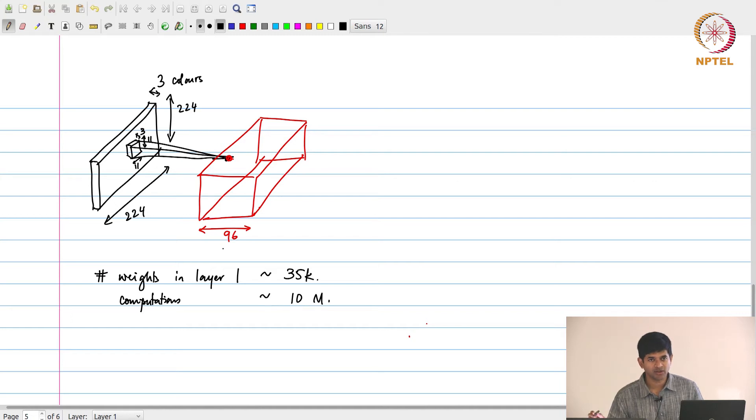I am probably this number is not accurate, but you can estimate it: it is basically 11 into 11 into 3 into 96 into 55 into 55. You do the computation, you will come up with a number.